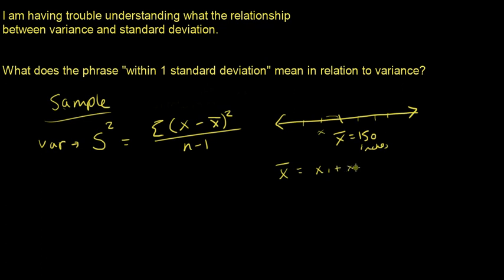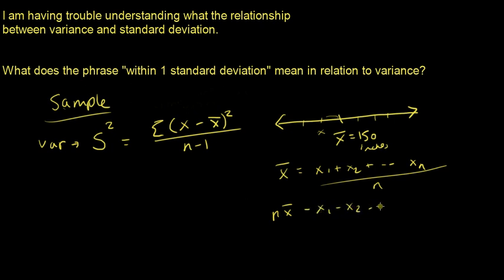X-bar is the sum of all data points divided by n. If I know x-bar, I only have n minus 1 unique data points, because I could always use algebra — multiply both sides by n, subtract all but one data point — and recover the last one. So given x-bar, there are only n minus 1 truly independent data points. That's roughly why we divide by n minus 1. It also has nice bias properties, which you'd explore further in later statistics courses.